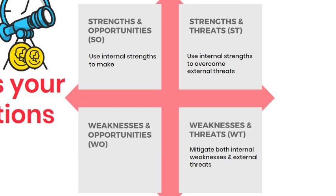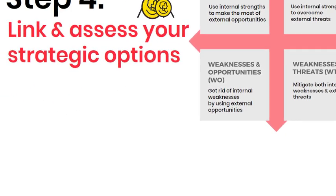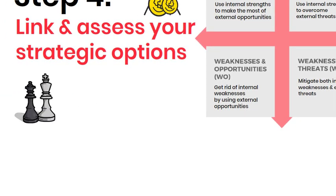Strengths and Opportunities (SO): this quadrant highlights the strengths that can be used to take advantage of opportunities. The goal is to formulate strategies that employ the use of all internal strengths to make the most out of the external opportunities that present themselves. Weaknesses and Opportunities (WO): this quadrant suggests ways to overcome weaknesses by taking advantage of opportunities. This quadrant is all about coming up with strategies to get rid of as many internal weaknesses as possible by using external opportunities. The alternatives you identify in this step are your strategic options.